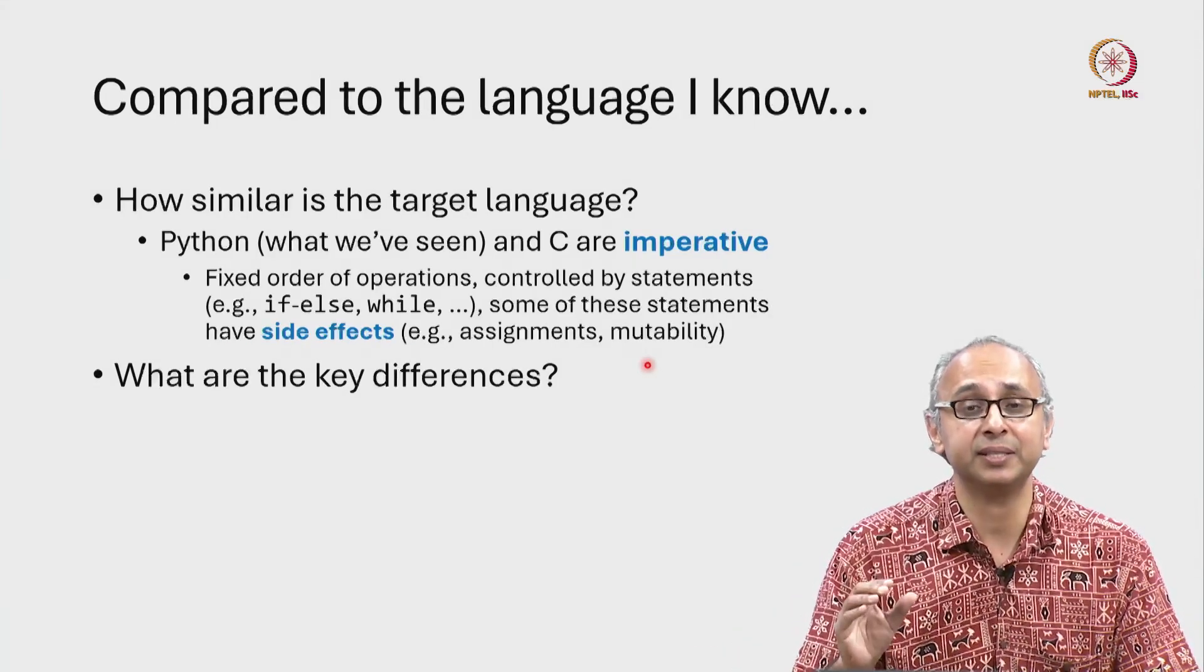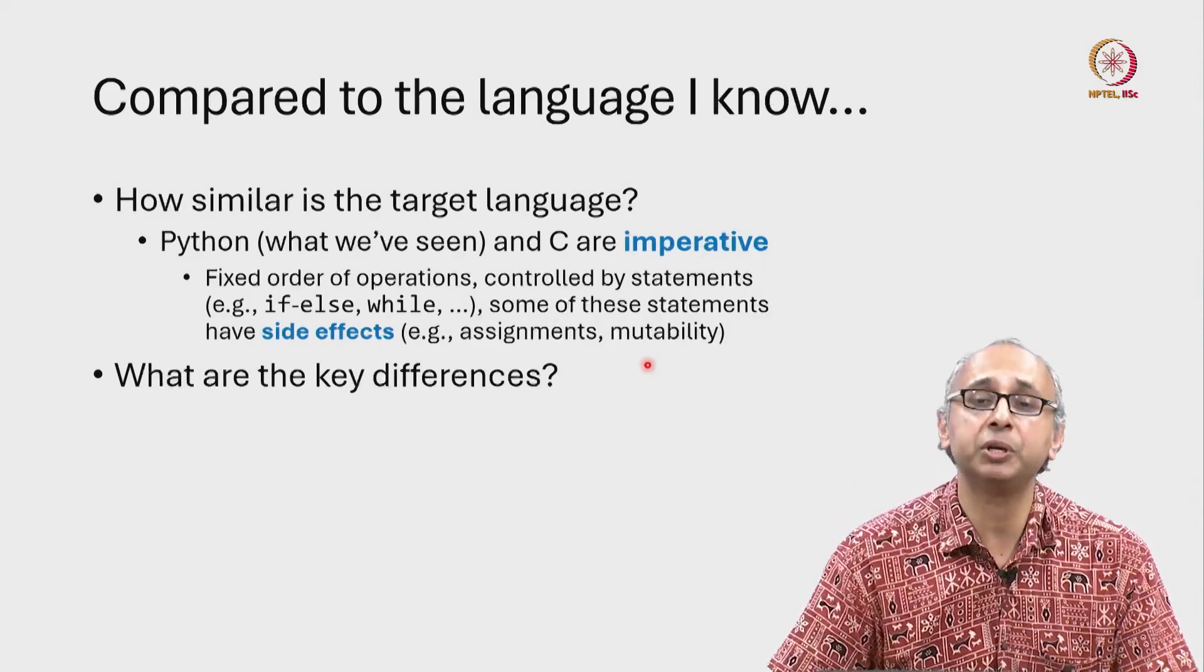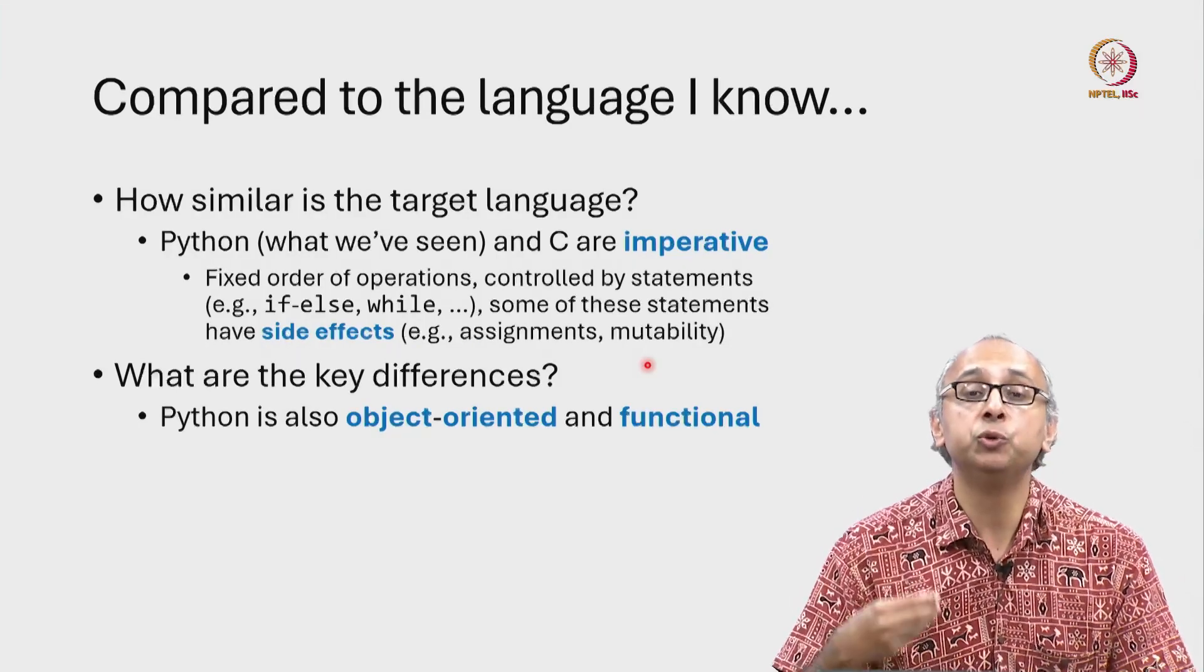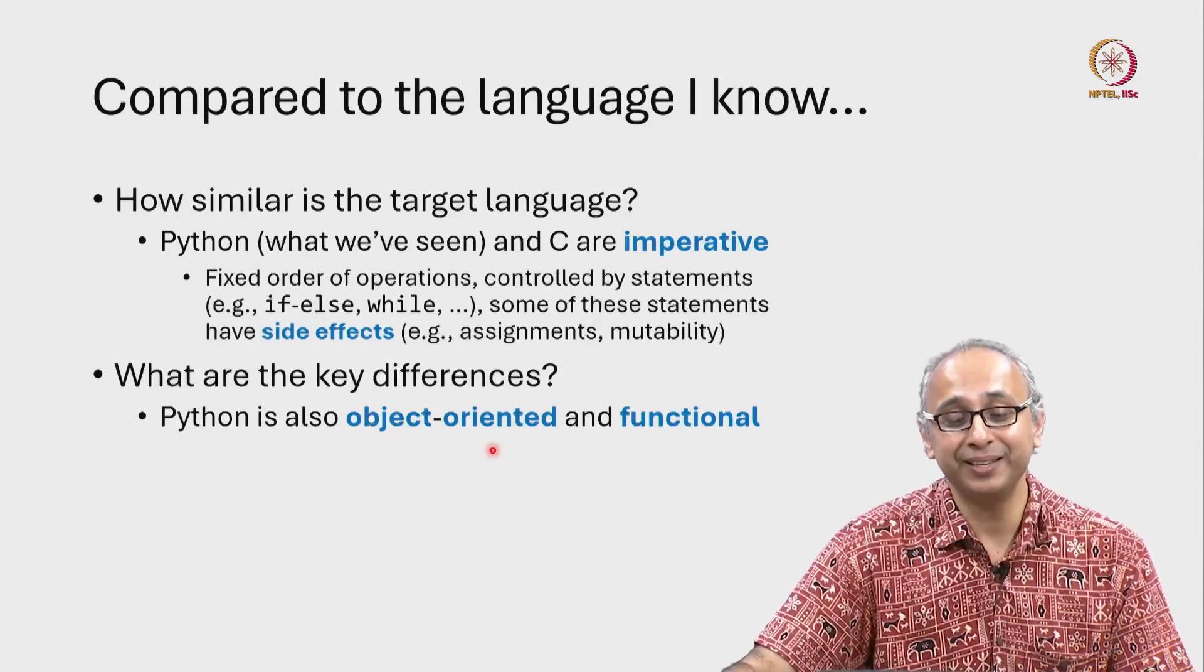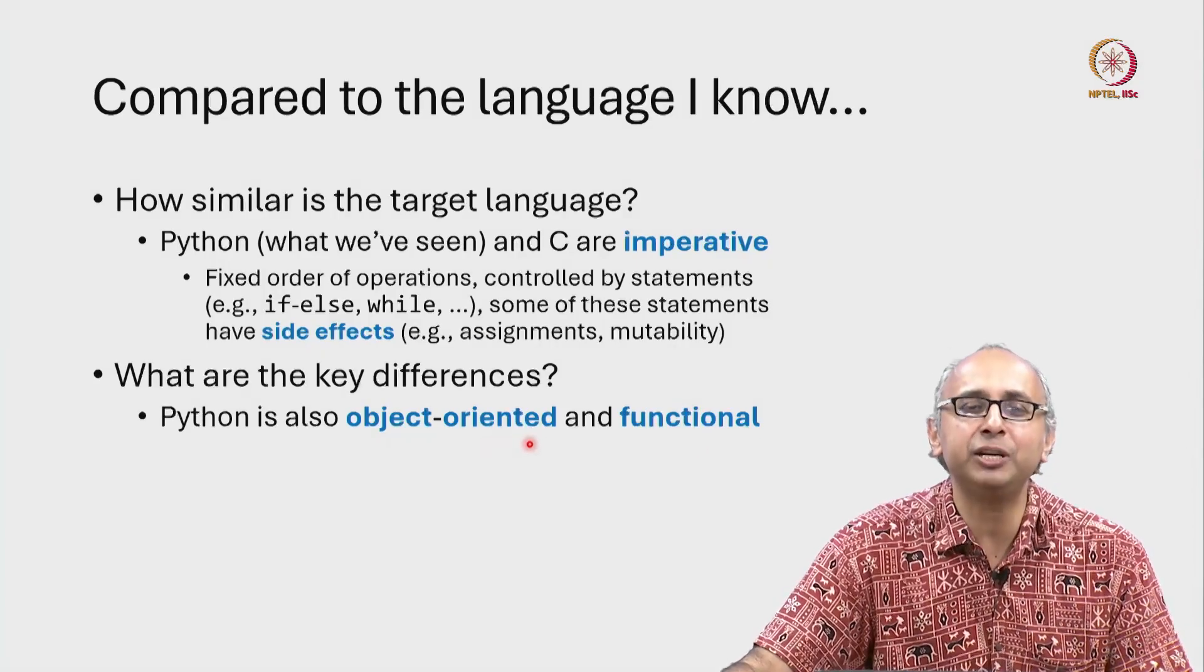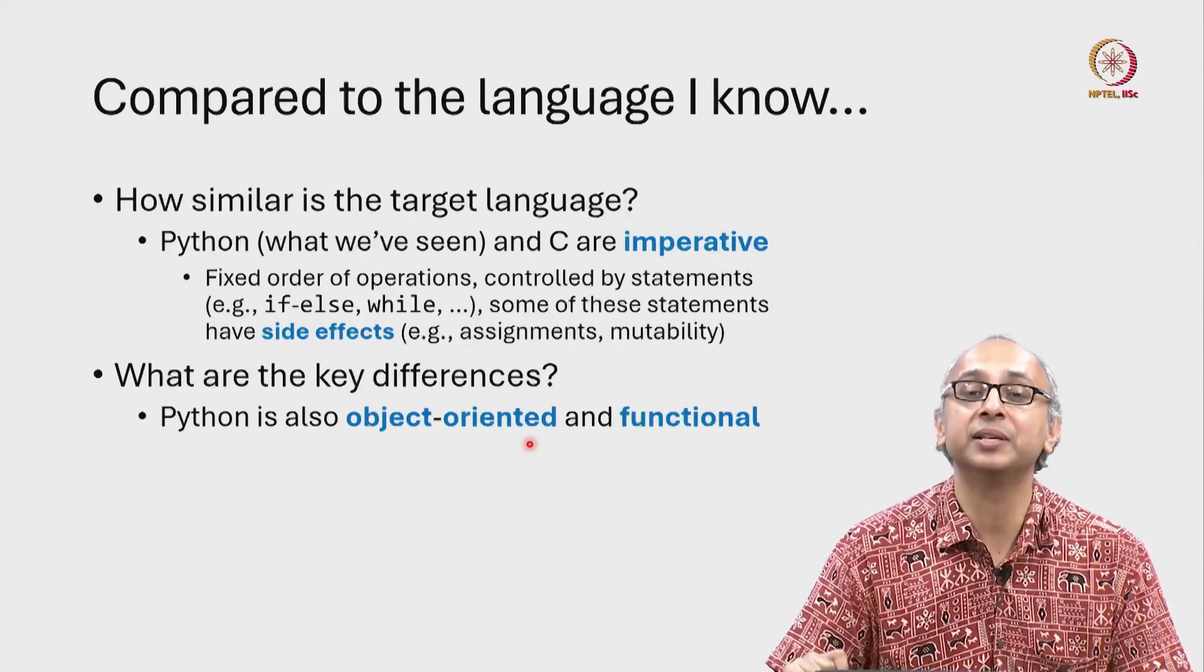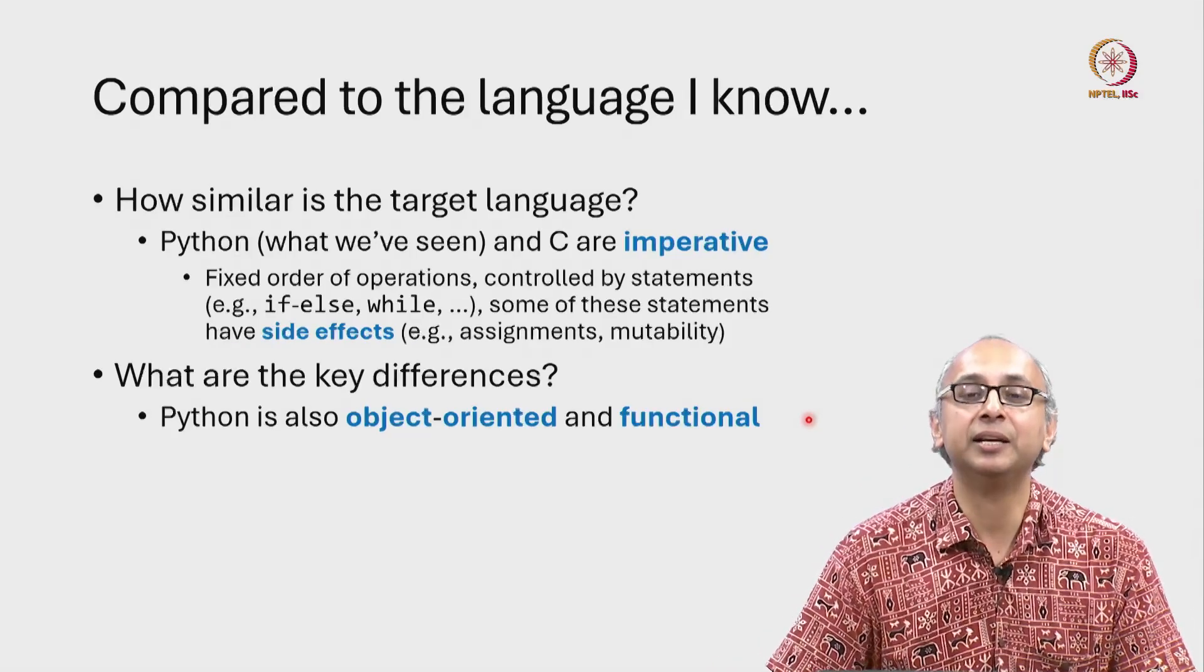So there are many similarities between Python and C in this regard. But there are also important differences. We haven't actually explored the whole of the Python programming language. And it turns out, you can write Python code that is object-oriented in nature and also functional in nature. We have only very briefly seen examples of object-oriented Python code when we, for example, call methods on certain objects.